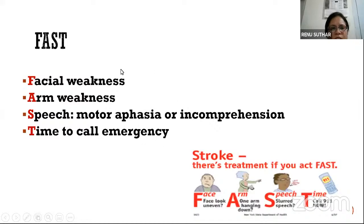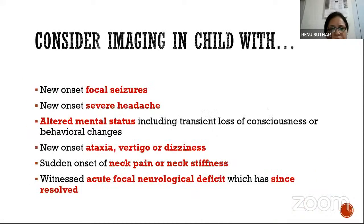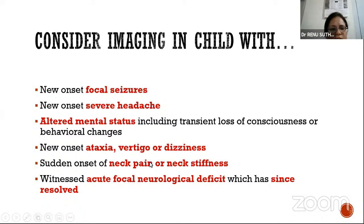The FAST mnemonic is used in adult patients: facial deviation, arm weakness or dangling, motor aphasia or incomprehension. However, these signs are less easily identifiable in children, and stroke diagnosis is usually delayed in pediatric patients. We should consider stroke and imaging in patients who have new-onset focal seizures, new-onset severe headache, altered mental status including TIAs or transient loss of consciousness, behavioral changes, vision loss, unilateral or new-onset ataxia, vertigo, dizziness, or sometimes neck pain or stiffness seen in children with dissections.